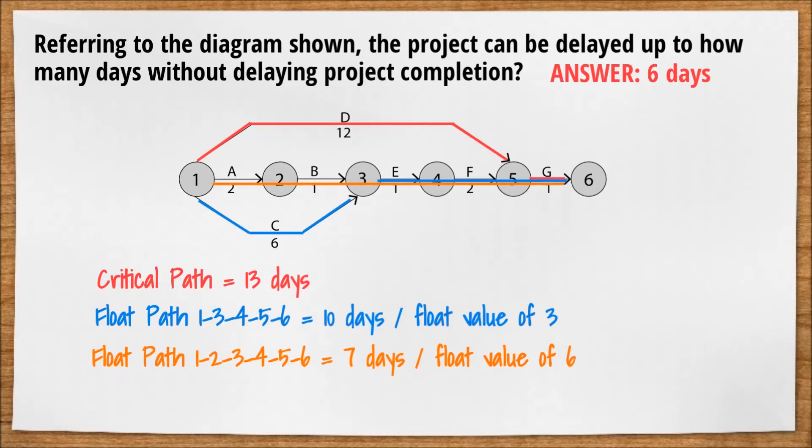Path 1, 2, 3, 4, 5, 6 would take 7 days, giving it a float value of 6, since 13 minus 7 is 6.